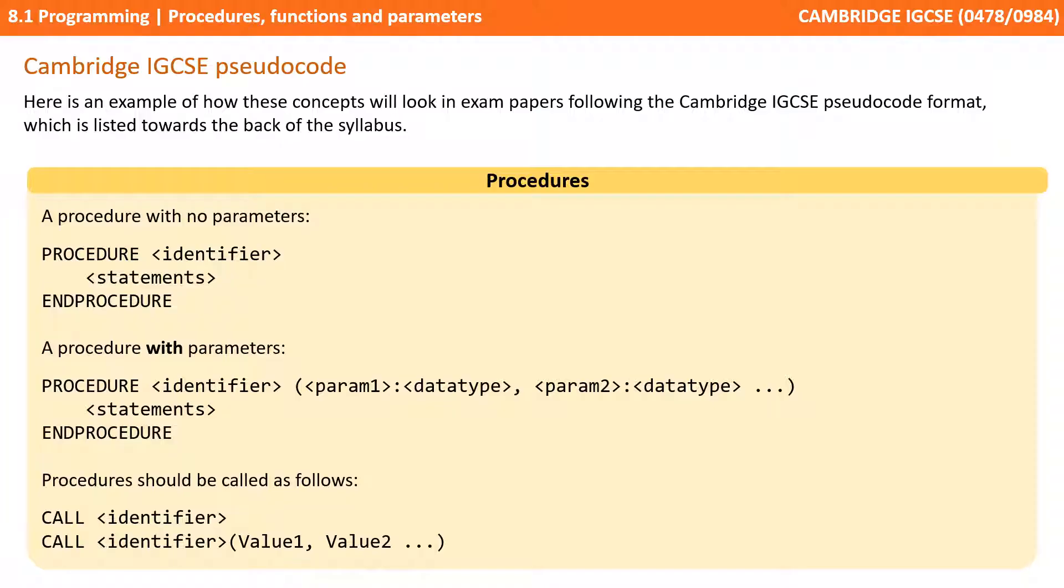The top there is how you declare a procedure with no parameters. And then the second section in the middle is how we declare a procedure with parameters. If you then want to call a procedure in pseudocode you use the word CALL followed by the procedure name. And if the procedure has parameters we then supply those. The parameters have to be supplied in the correct order and of the correct data type to match the definition of the procedure that you wrote.